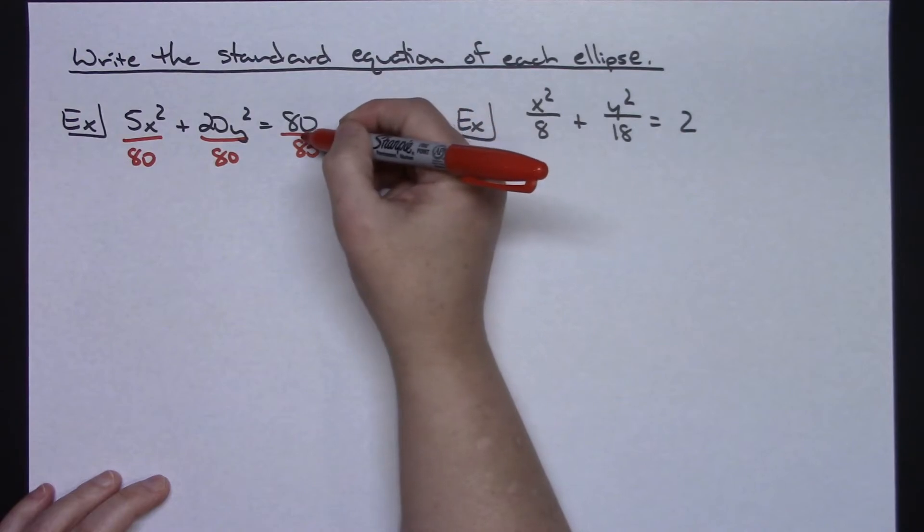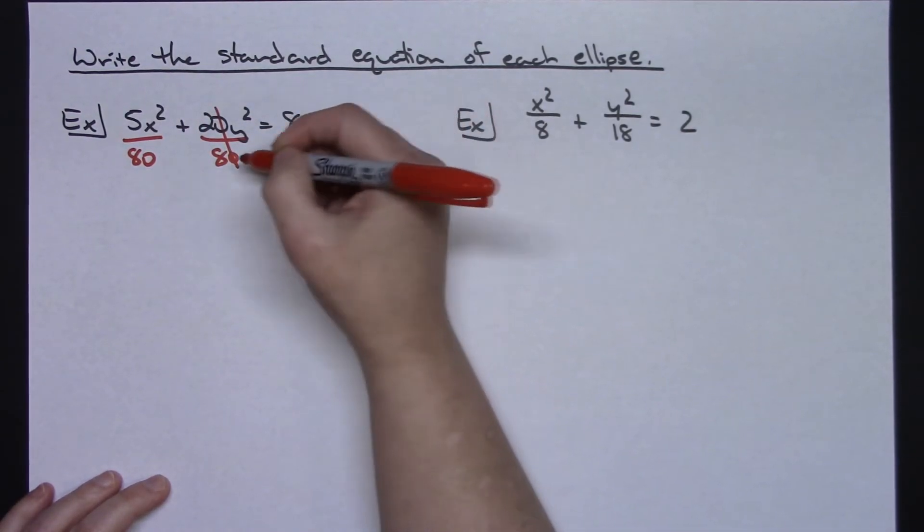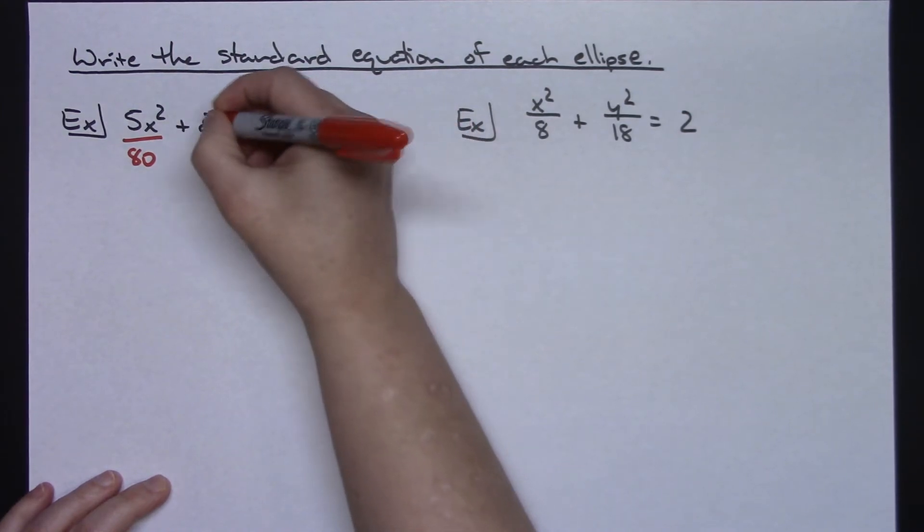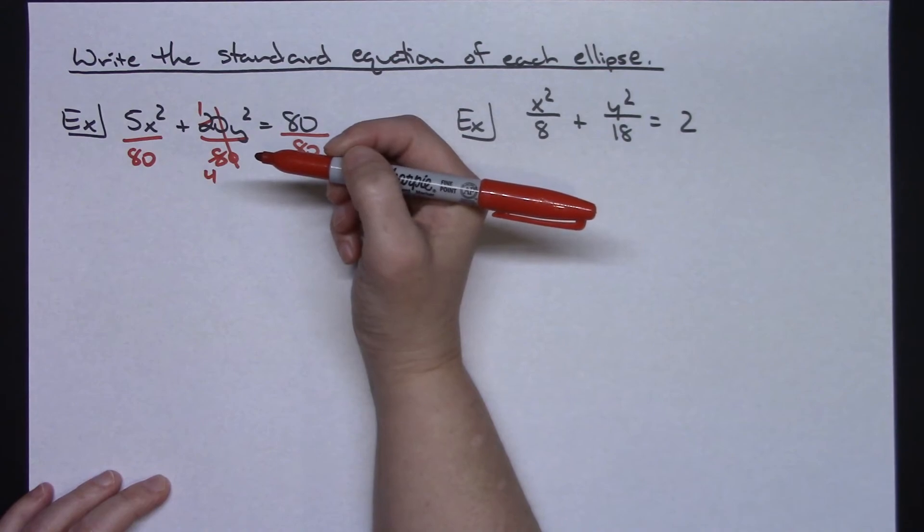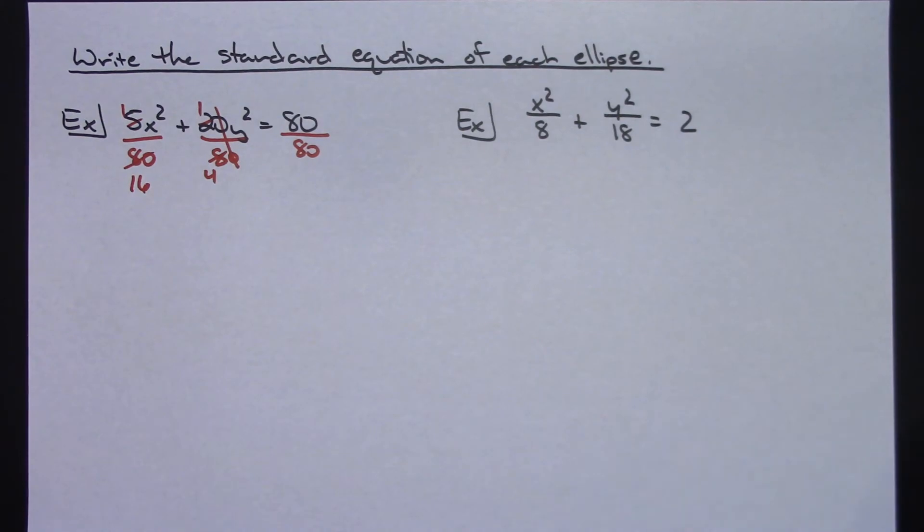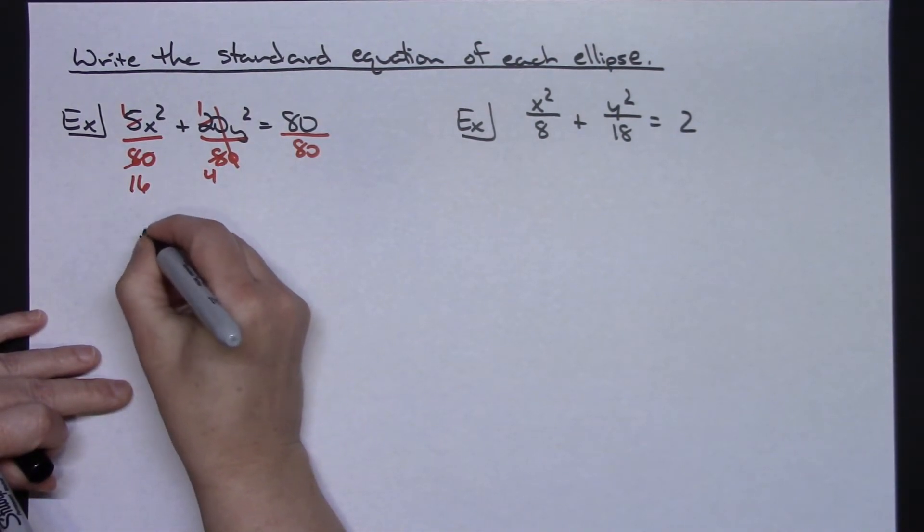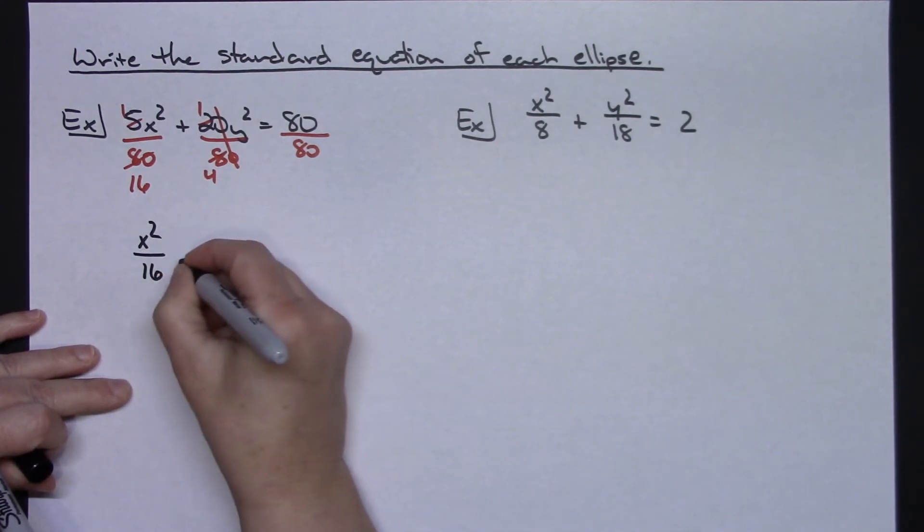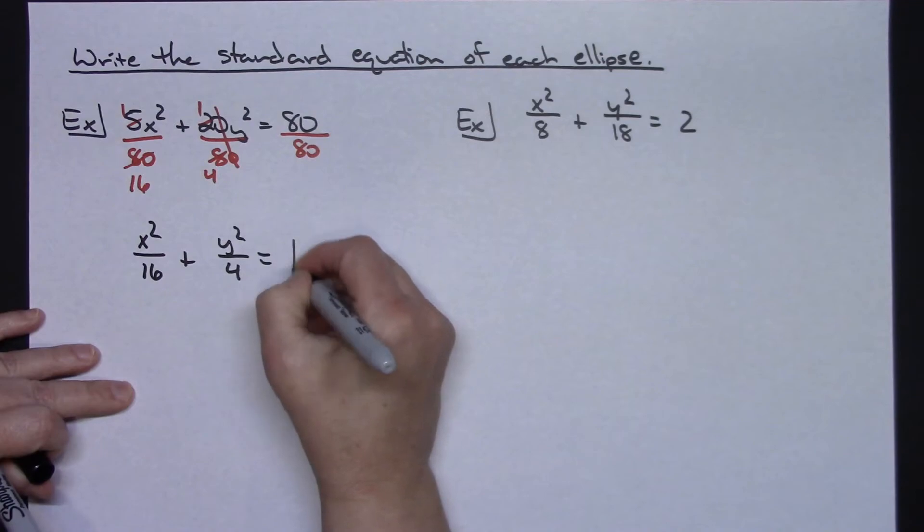And then see if I can't simplify down to get that standard equation. So 80 over 80 is going to give me 1. 20 over 80, real quickly I can cross out the 0's and make that a 1/4. And then 5 over 80, reducing that to lowest terms, 5 goes into 5 once, 5 goes into 80 16 times. So then my standard equation on my ellipse is going to be x squared over 16 plus y squared over 4 equals 1.